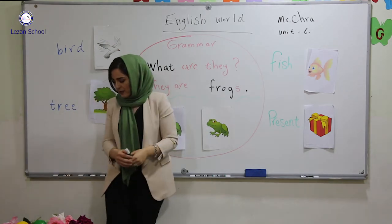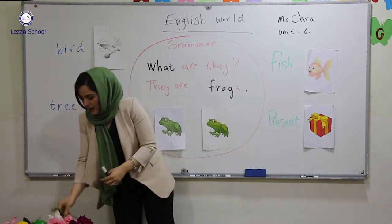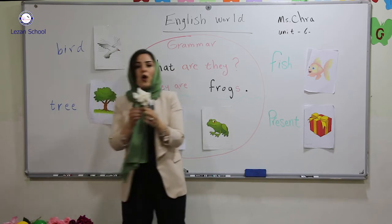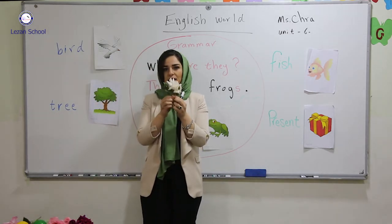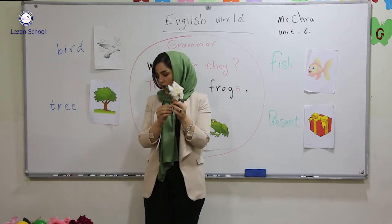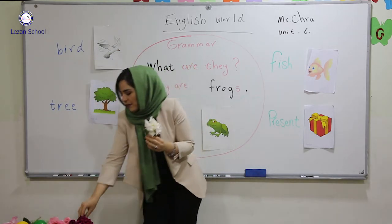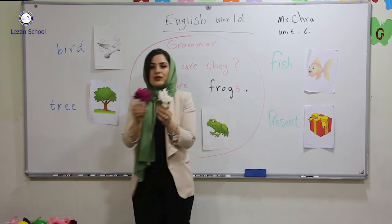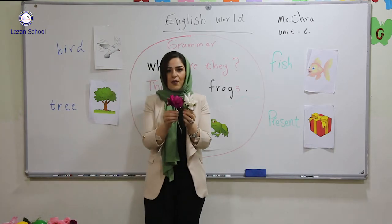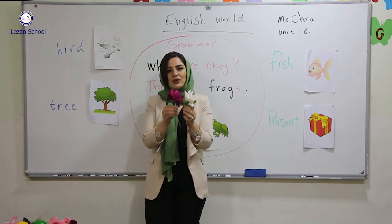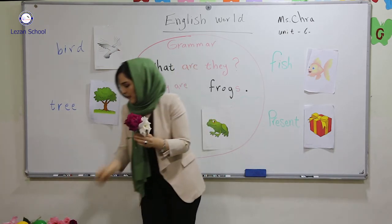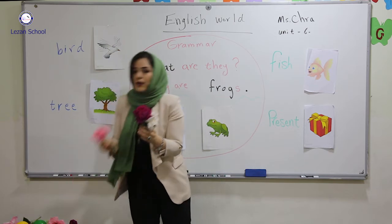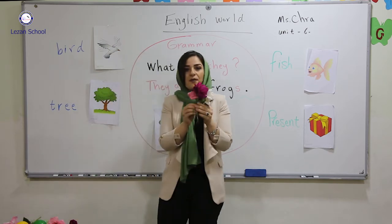Another example. One flower — a white flower. Two flowers. Three flowers.